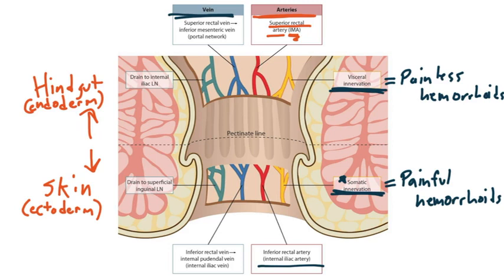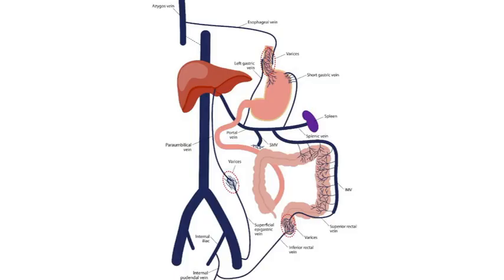Now let's look at the veins. The superior rectal vein drains into the portal system through the inferior mesenteric vein — so superior rectal vein goes to the portal network. Below the line, the inferior rectal vein travels through the internal pudendal vein into the internal iliac vein, and ultimately to the IVC — outside the portal network. The superior rectal vein drains into the inferior mesenteric vein, which drains into the splenic vein, which joins the superior mesenteric vein to form the portal vein, and blood continues to the liver.